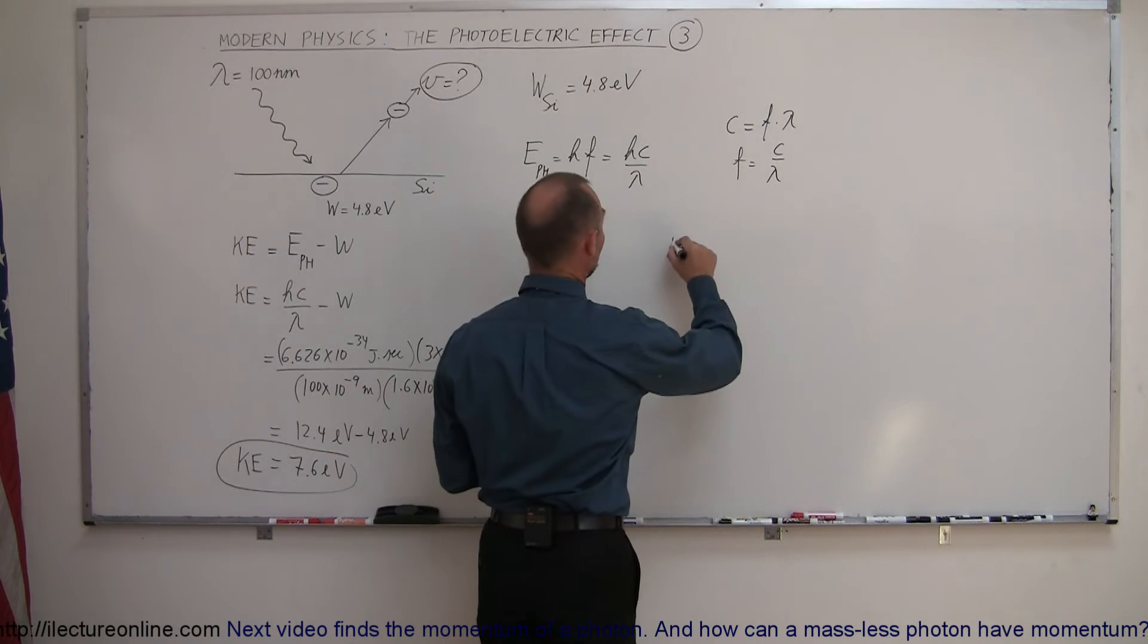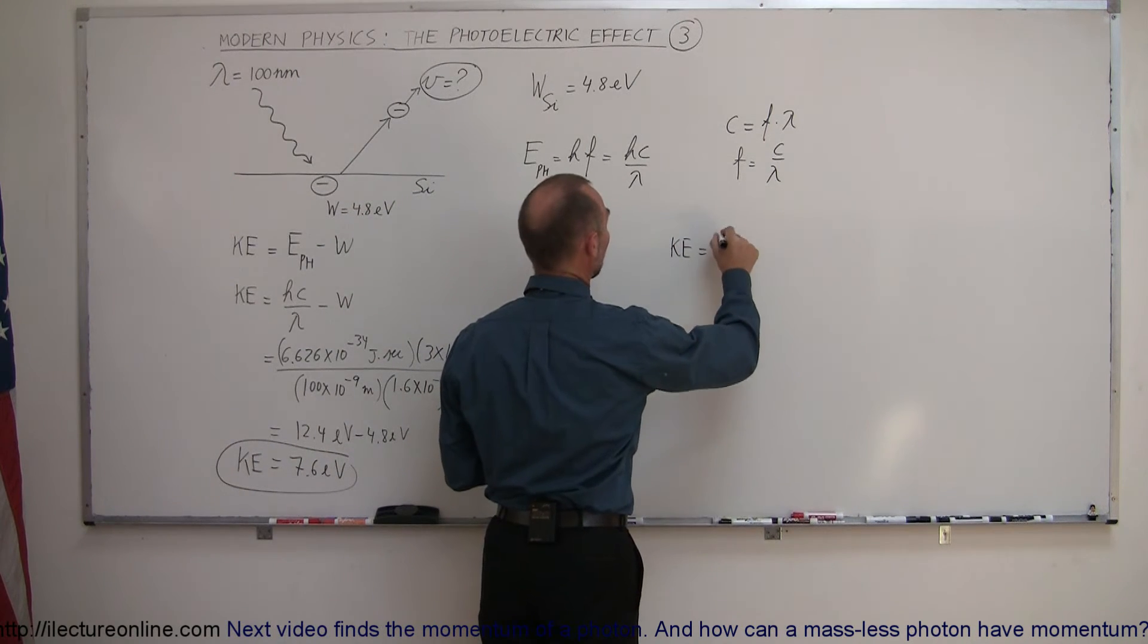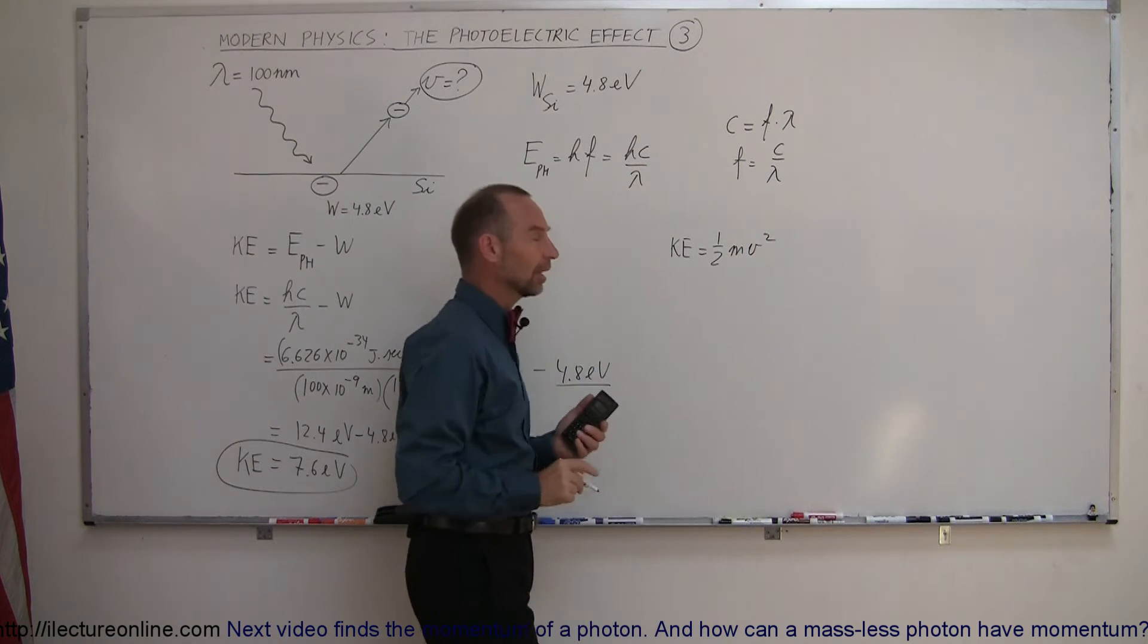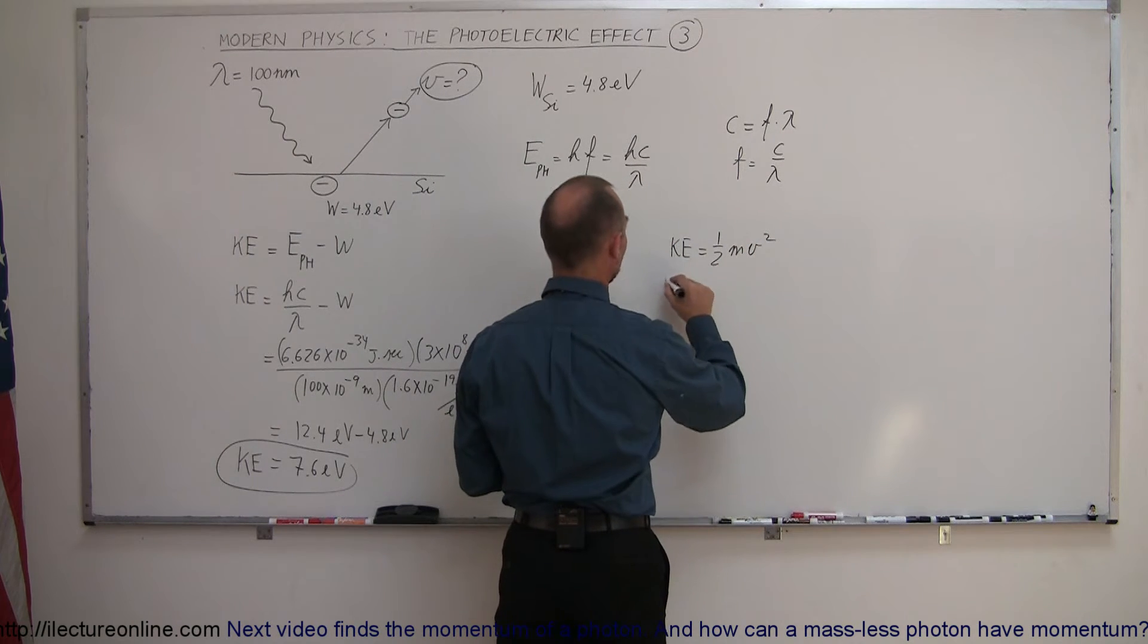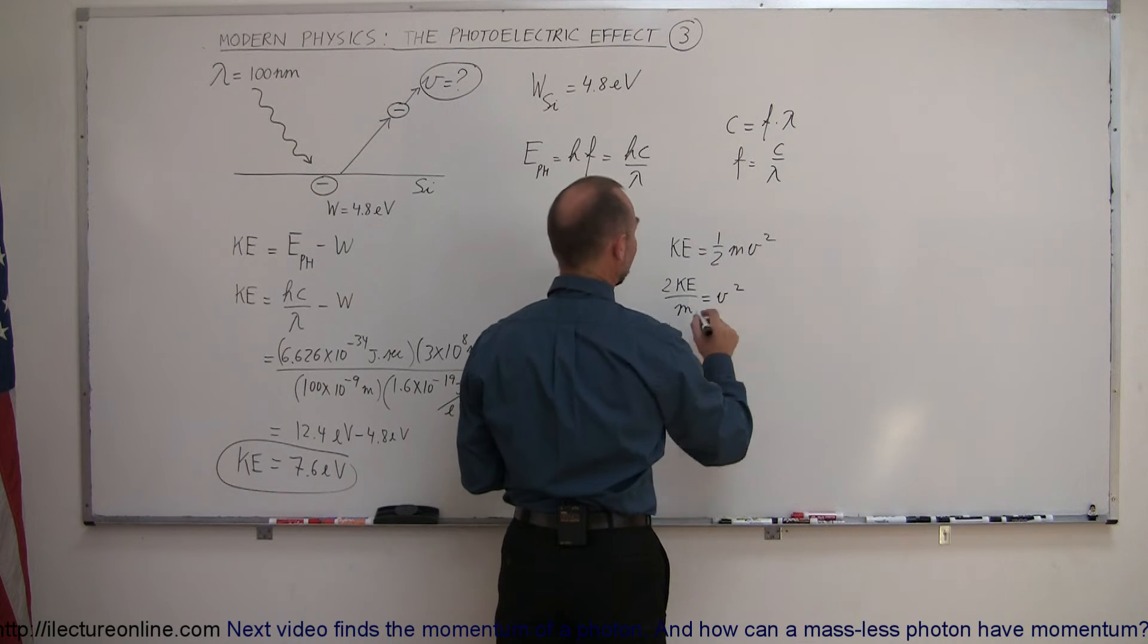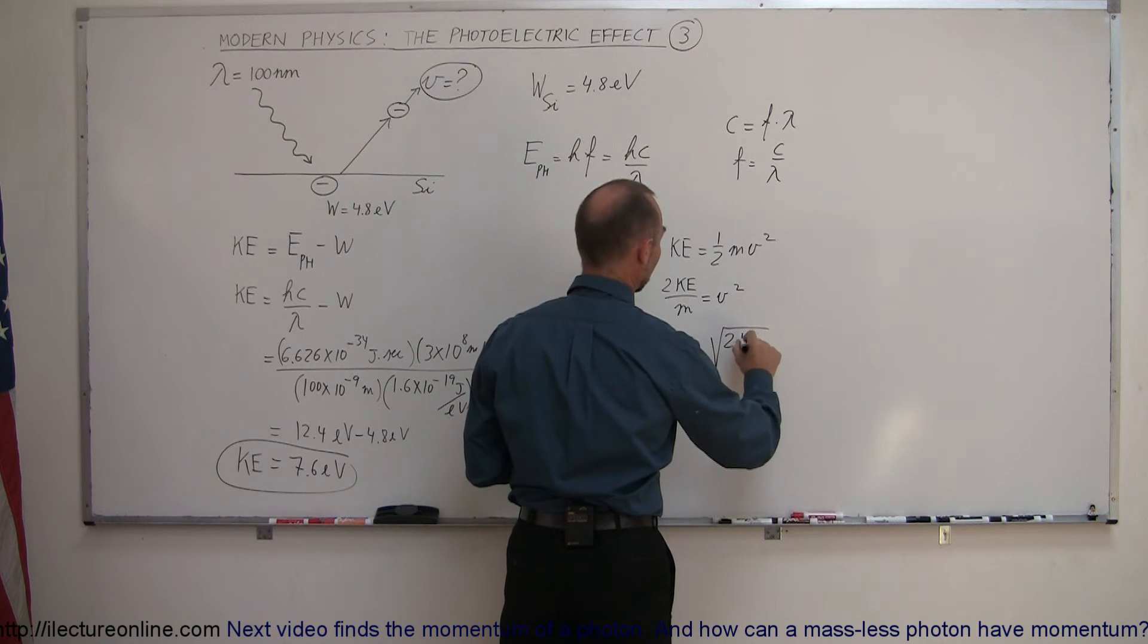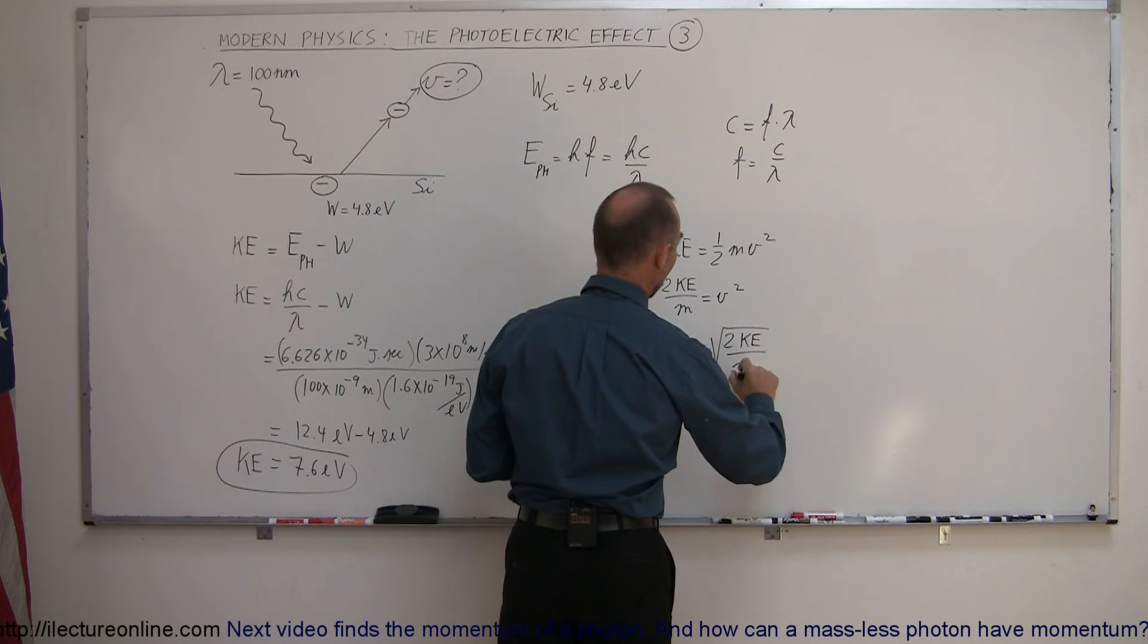The old equation that says kinetic energy is equal to one-half mv squared will give us the velocity. Solving this for v, we can then say that twice the kinetic energy divided by the mass equals v squared. Taking the square root of both sides, velocity is equal to the square root of twice the kinetic energy divided by the mass.